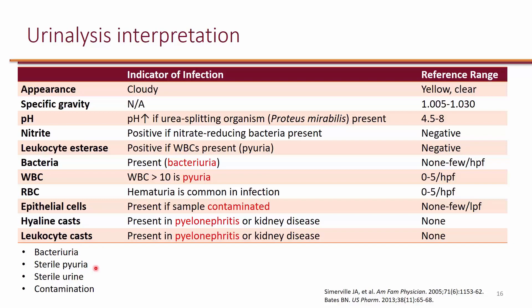Bacteriuria and sterile pyuria — sometimes you will not have bacteria in the urine, but you will see an increased white blood cell count. That's what is referred to as sterile pyuria. Pyuria means pus is present — white blood cells — so there's some sort of infection going on, but it's sterile because you didn't see any bacteria. This can be due to different reasons; one example is if a patient has a viral infection, you will still get a white blood cell response but there will be no bacteria. This is important to know because if you get sterile pyuria, the patient has some sort of infection, but you don't need antibiotics to treat it since there are no bacteria.